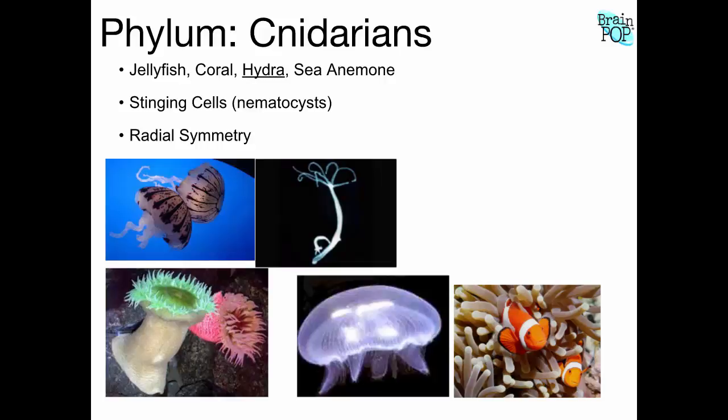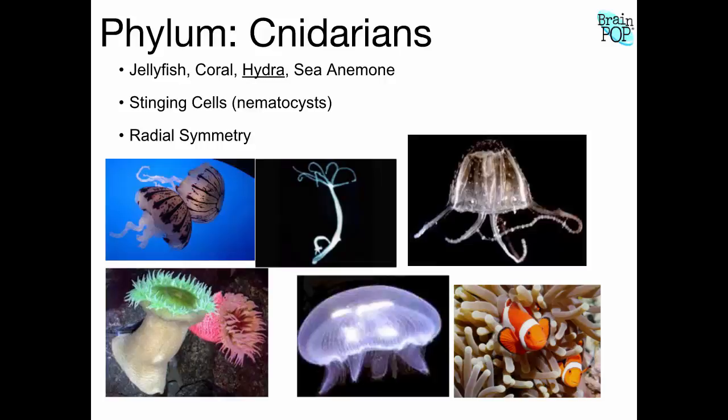Jellyfish wash up on the shore if you're at the beach, and that's when people sometimes get stung. There are some types of jellyfish strong enough to actually kill a person — not generally found in places we would go, but there are very strong toxins in those jellyfish tentacles. So sponges are very, very simple; cnidarians are also pretty simple organisms.